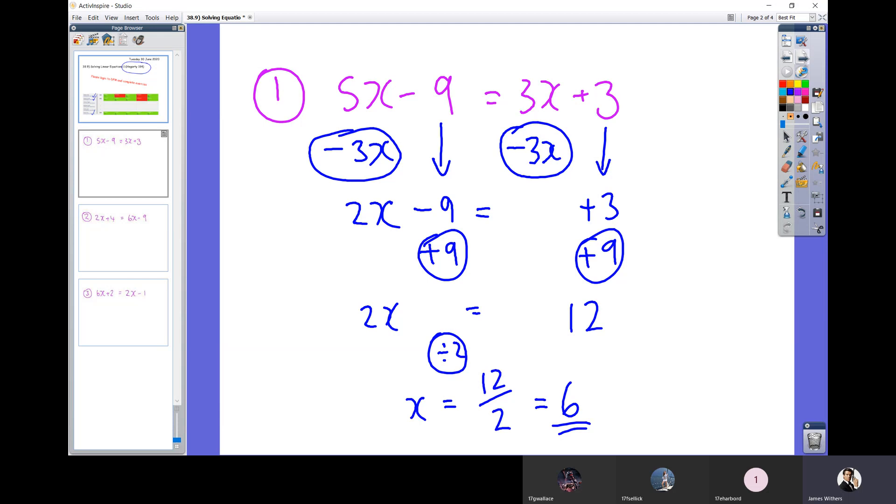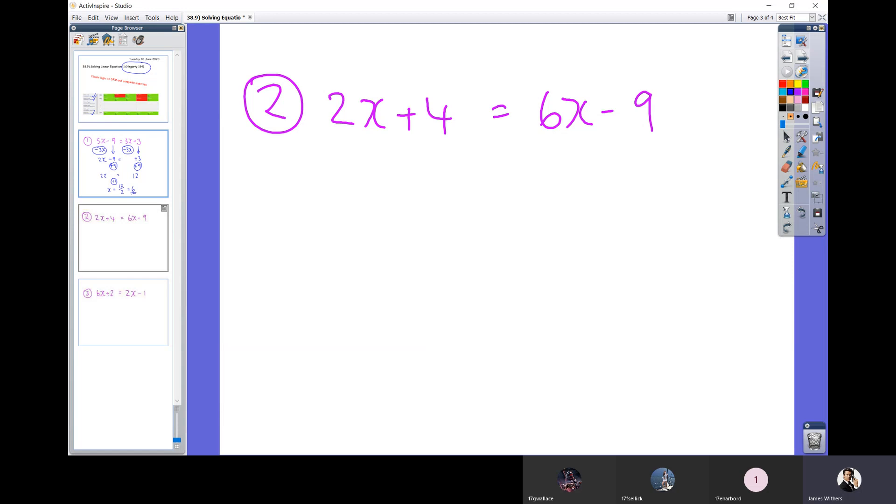Question 2. So on this occasion, the x's are greater on the right-hand side, so we want to move all our x's over onto the right. So it is the 2x that has to be undone. So our first step is to choose to take away 2x from both sides. This does not affect the normal numbers, so the plus 4 and the minus 9. So 2x take away 2x is nothing. 6x take away 2x is 4x.